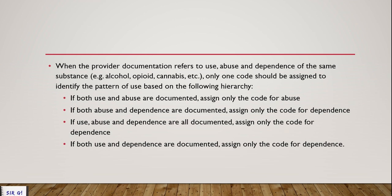In exam scenarios, they often highlight 'use' at the beginning, 'abuse' in the middle, and 'dependence' at the end — so always read the whole scenario to capture the highest hierarchy term. Remember, this hierarchy applies only to the same substance. If a patient has alcohol dependence and also opioid use or cannabis abuse, each substance must be coded separately.